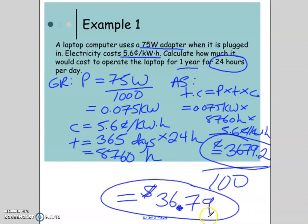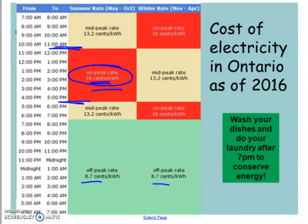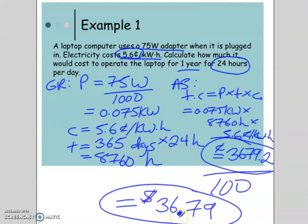This is important. So our therefore statement would be, it's a little bit squished in here, but our therefore statement would be the cost to run this laptop computer for one year, 24 hours a day, would be $36.79. Now, you're probably wondering, that's pretty cheap. But keep in mind, this question is 5.6 cents. Imagine it was 18 cents, right? So it would be much more than just $36. So the cost will change. So obviously, this is dependent on the information given in the question.